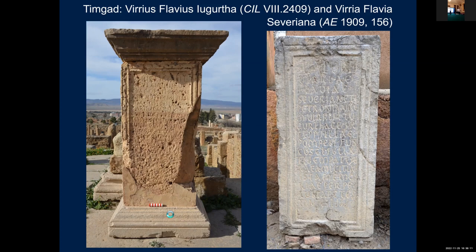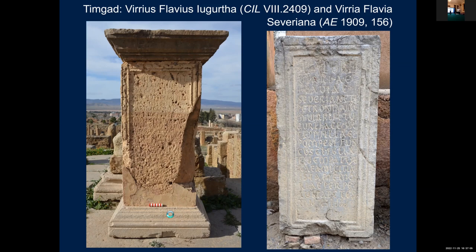As Lisa Fentress has pointed out, Jugurtha may in fact be a signum — he is a true North African, since Jugurtha was the famous North African leader against Rome in the late second century BC. A base to his daughter Viria Flavia Severiana was found in 1909 in the Byzantine fort, presumed to have come from the forum — though the subsequent discovery of the Aqua Septimiana Felix sanctuary within the fort might lead us to wonder if it was set up there. It's not an exact pair to her husband's base since it's on a different stone — blue lias rather than local sandstone — but again the use of uncial letters lends it similarity in form and intent. The first line, 'Valubi,' seems to be her signum, and her name Severiana would fit perfectly well with an early third-century Severan dynasty date.